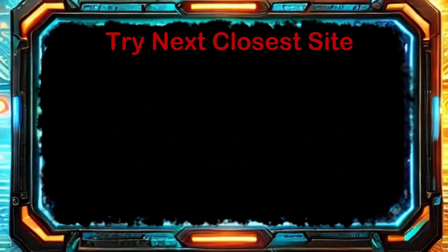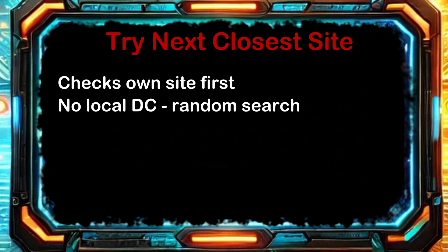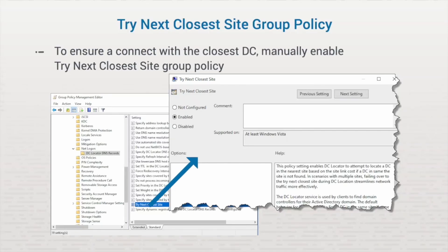You manipulate the path of replication by assigning a higher or lower cost value to a site link object, and KCC will choose the lowest cost path. Another concept to understand with sites is the Try Next Closest Site Group Policy setting. If a client computer needs to locate a domain controller, it'll look in its own site first. If a domain controller isn't found — for example, because the domain controller failed — the client computer searches randomly for a domain controller in other sites. To ensure that client computers find the closest or fastest domain controller, you can enable the Try Next Closest Site Group Policy setting. This setting isn't configured by default.